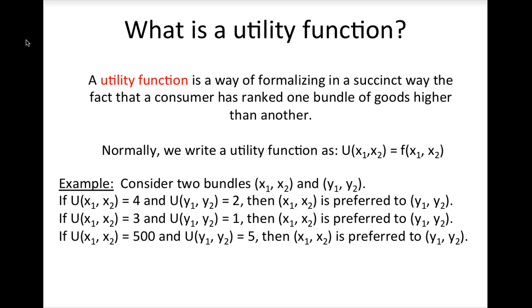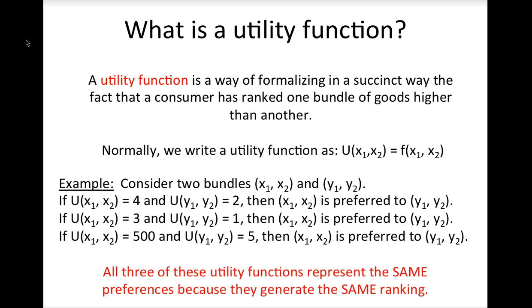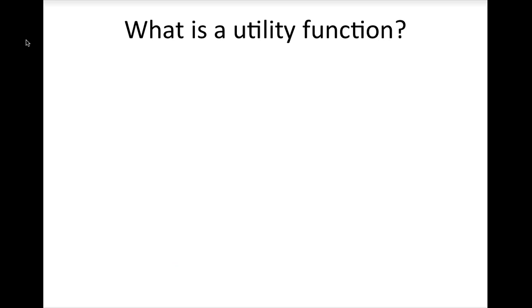Even though the numerical values of utility in these examples are very different, all of these utility functions represent the same preferences because they generate the same ranking of bundles. This example has driven home a point from last lesson: in our model of preferences, we do not care how much a consumer likes one bundle of goods versus another. The reason why we don't care is that it's not something that we can measure or observe in real life. Thus, the magnitude of utility is irrelevant. All we care about is the consumer's rank ordering of bundles, which we call ordinal utility.